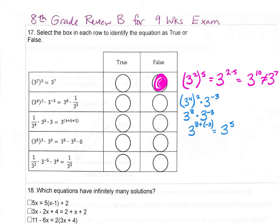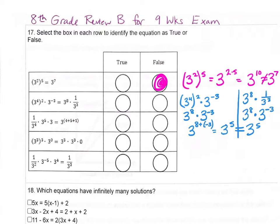We want to see if that's equal to what we get for 3 to the 8th power times 1 over 3 to the 3rd power. Since 3 to the 3rd power is under 1, we can move it to the numerator and change the sign. We can tell they're going to be the same — we get 3 to the 5th power. So these are equal; this one is true.